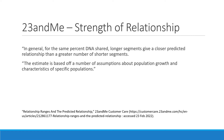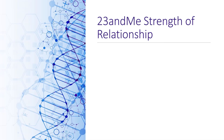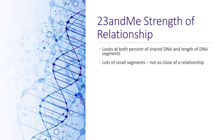One thing to notice is that when you sort by percent of DNA shared, the relationships become mixed up — sometimes there will be a third cousin, then a fourth cousin, then a third cousin again — because 23andMe looks at segment lengths to determine if somebody is closer. The strength of relationship sorting looks at both percent and the length of DNA segments.